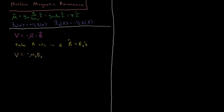If we look at this in terms of operators, we define this as minus B_Z times the operator for mu_Z, which is equal to minus gamma times B_Z times the I_Z operator. So we went from mu_Z to gamma times I_Z, and the minus B_Z, the Z component of the magnetic field, carried through. This is our potential energy operator for a magnetic field interacting with the nuclear spin of our nucleus.